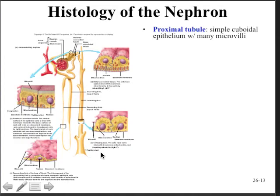One of the things we have to understand about the nephron is that it's not one continuous tube made up of a single type of cell along its entire length. Because different parts of the tube perform different tasks, the cells that populate them are slightly different — you could think of the nephron as a quilt of cells stitched together where different parts do different jobs. The proximal tubule is simple cuboidal epithelium with microvilli present for increasing surface area, because there is a considerable amount of absorption and secretion that goes on in the PCT.